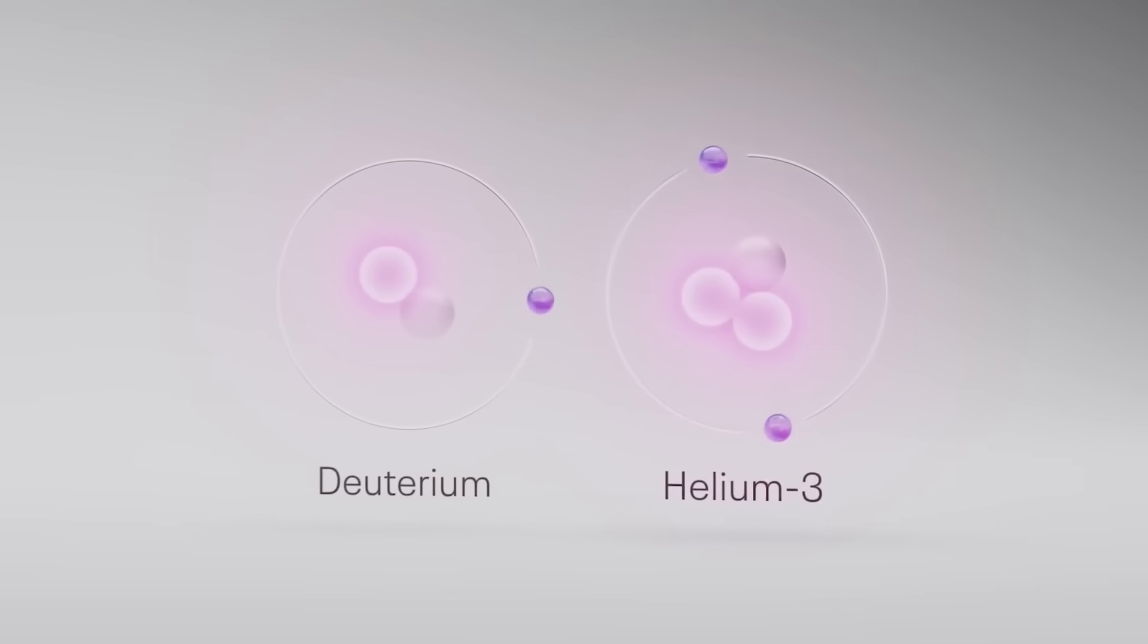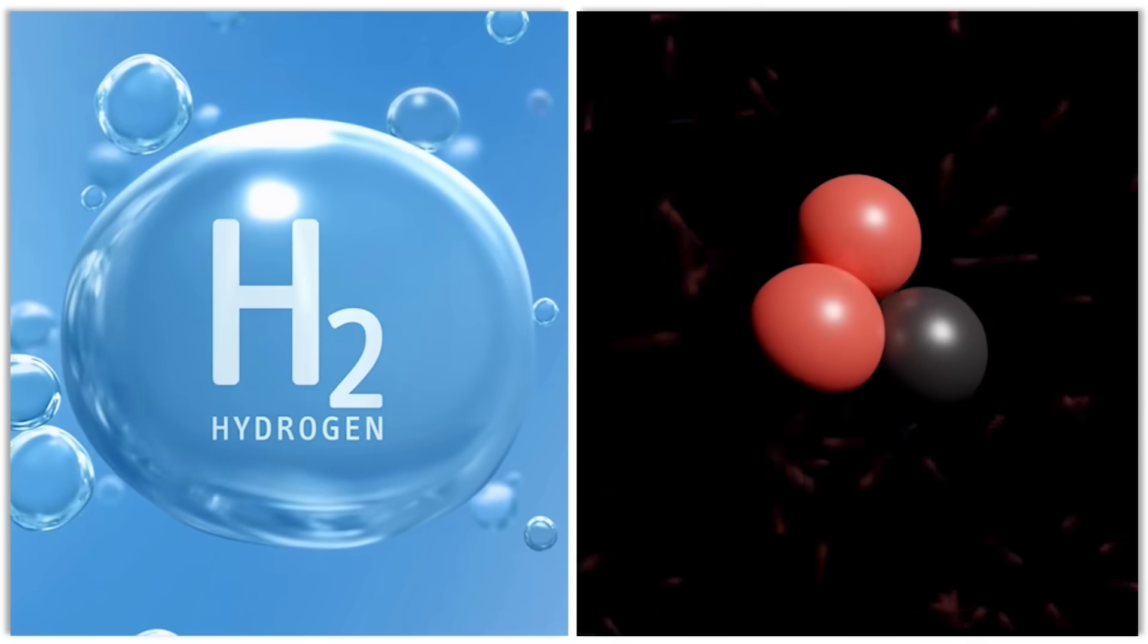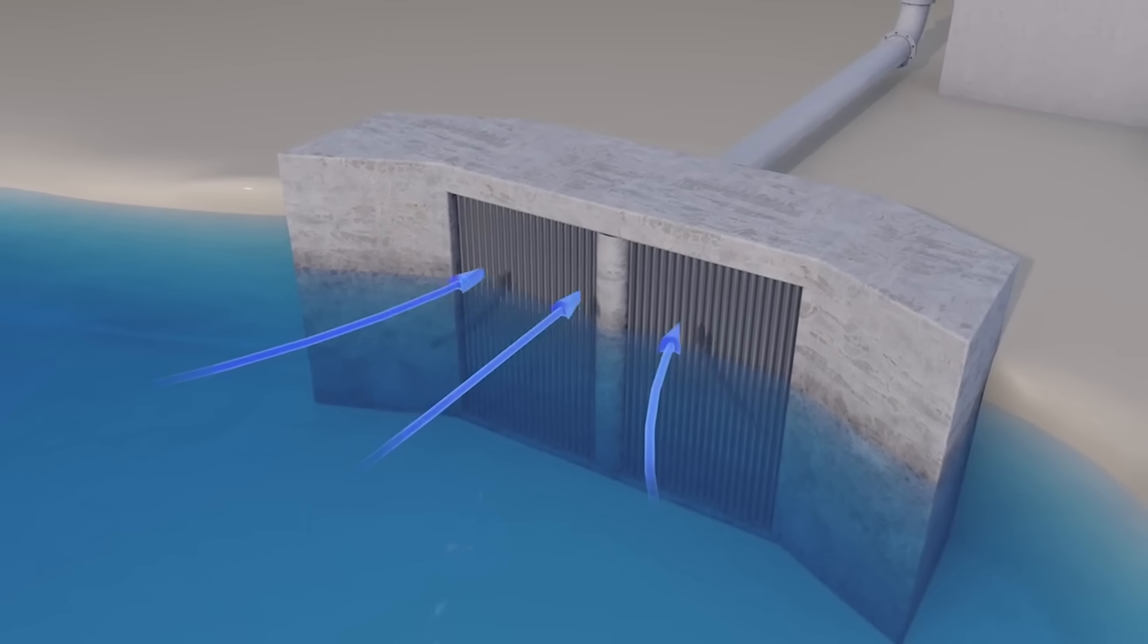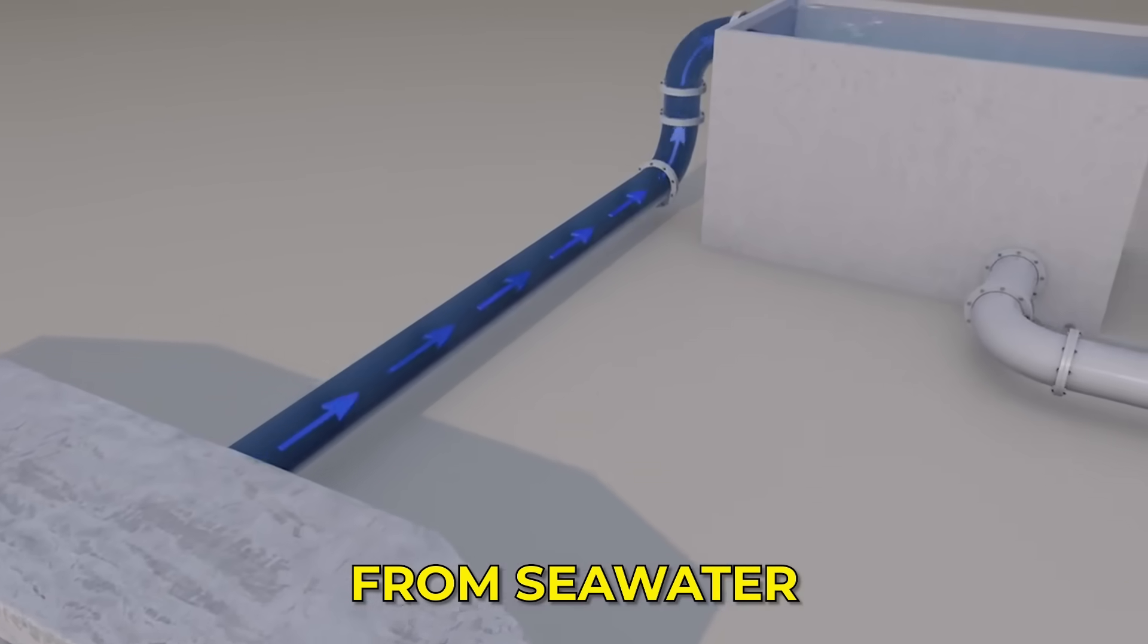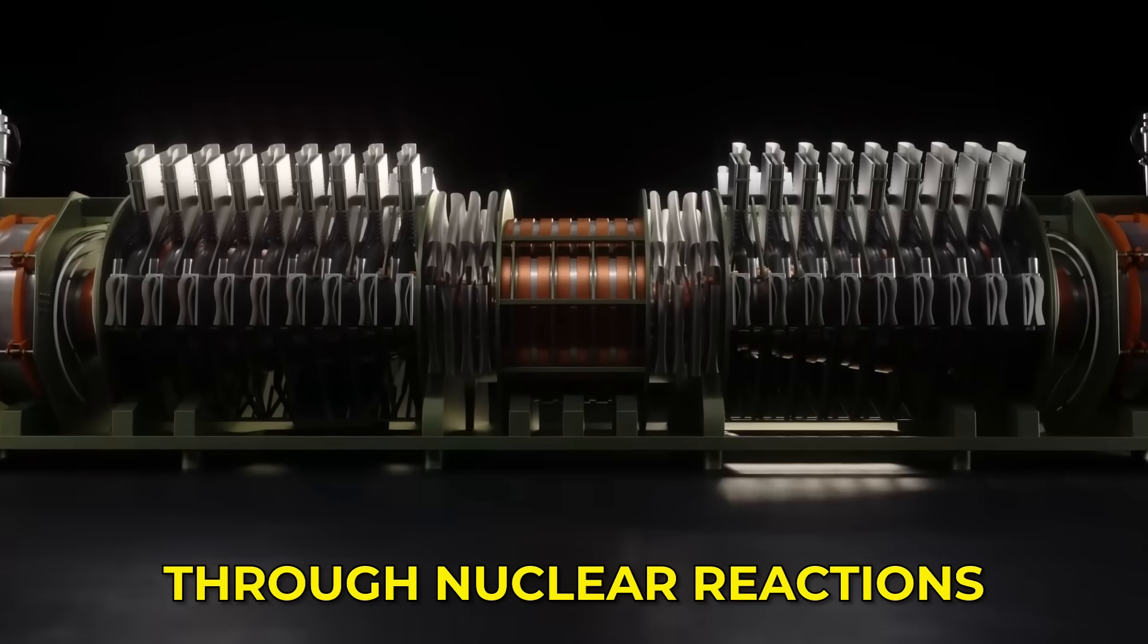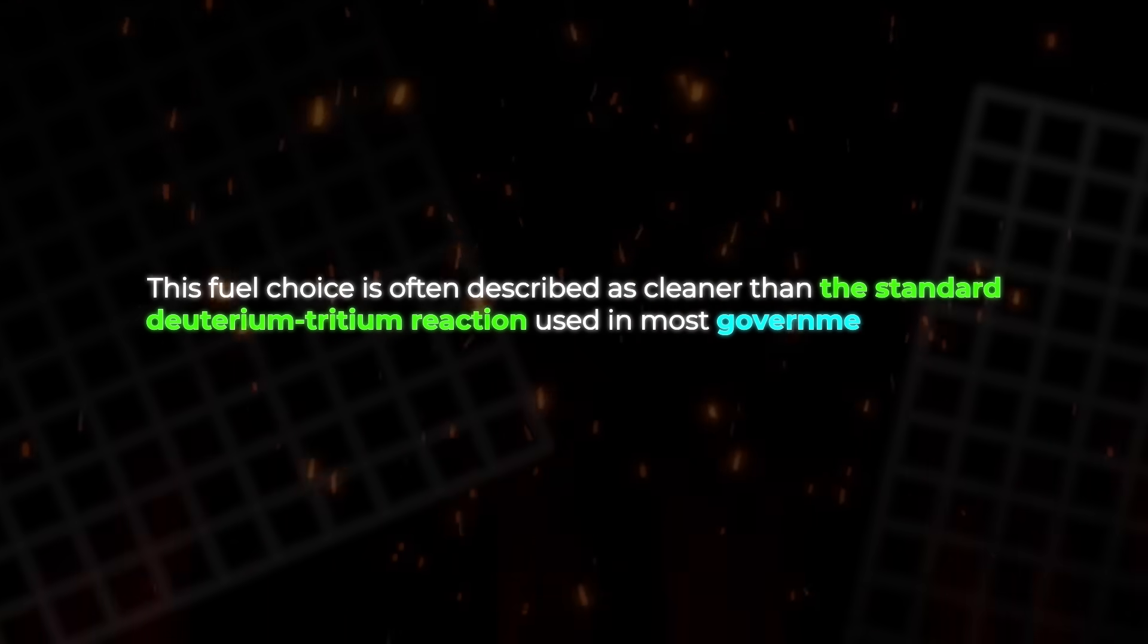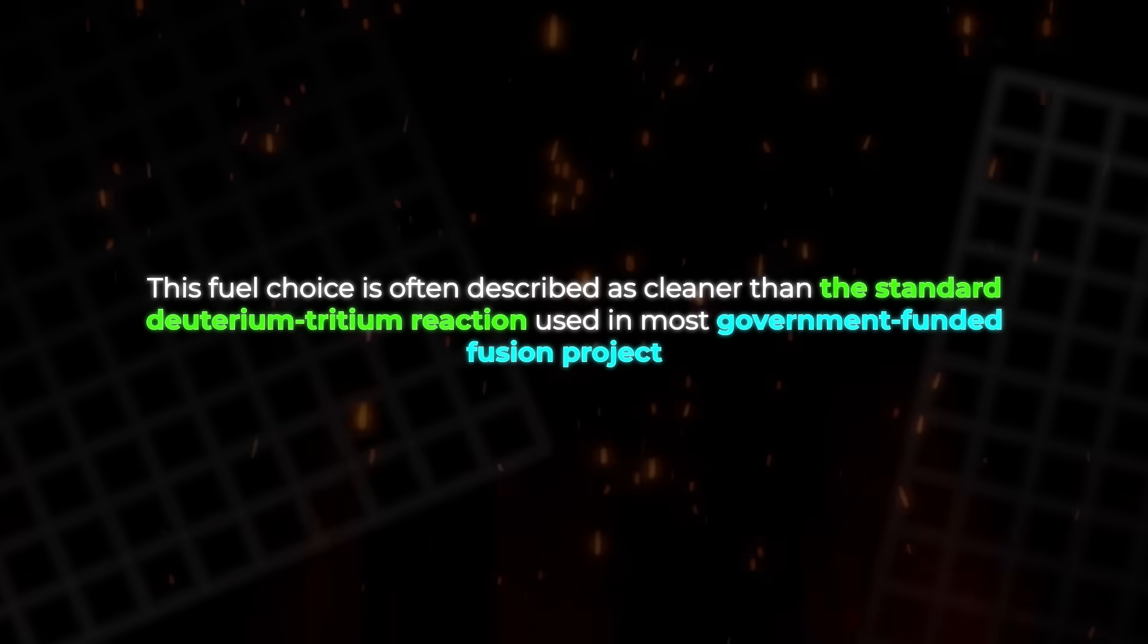Helion's chosen fusion fuel is a mixture of deuterium and helium-3, two isotopes of hydrogen and helium. Deuterium can be extracted easily from sea water. Helium-3 is rare on Earth, but can be produced in small amounts through nuclear reactions.